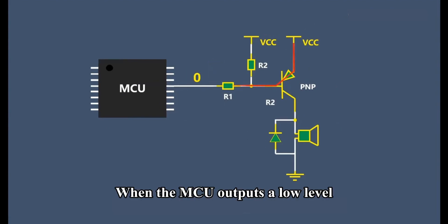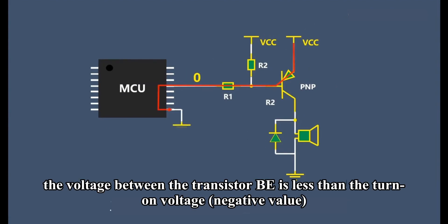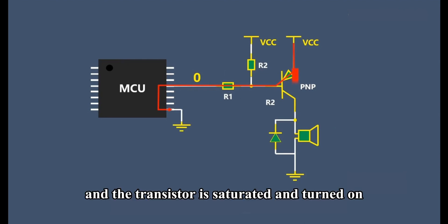When the MCU outputs a low level, the voltage between the transistor base and emitter is less than the turn-on voltage, and the transistor is saturated and turned on.